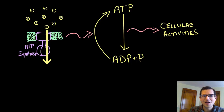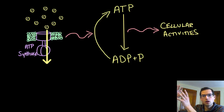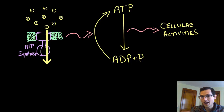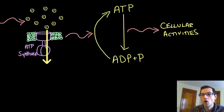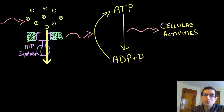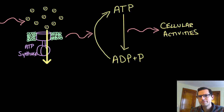But now the question must arise: how does the proton gradient form? We know from our study of transport that establishing a higher concentration on one side of the membrane requires energy. So energy must have been spent to establish this proton gradient. Our question now is, what's providing that energy? Where did the energy come from to make the proton gradient? And this is a really important question because this ultimately would be the answer to the question of what powers your cellular activities. So the next step is to answer the question: what provides the energy to make the proton gradient, and how is it made?